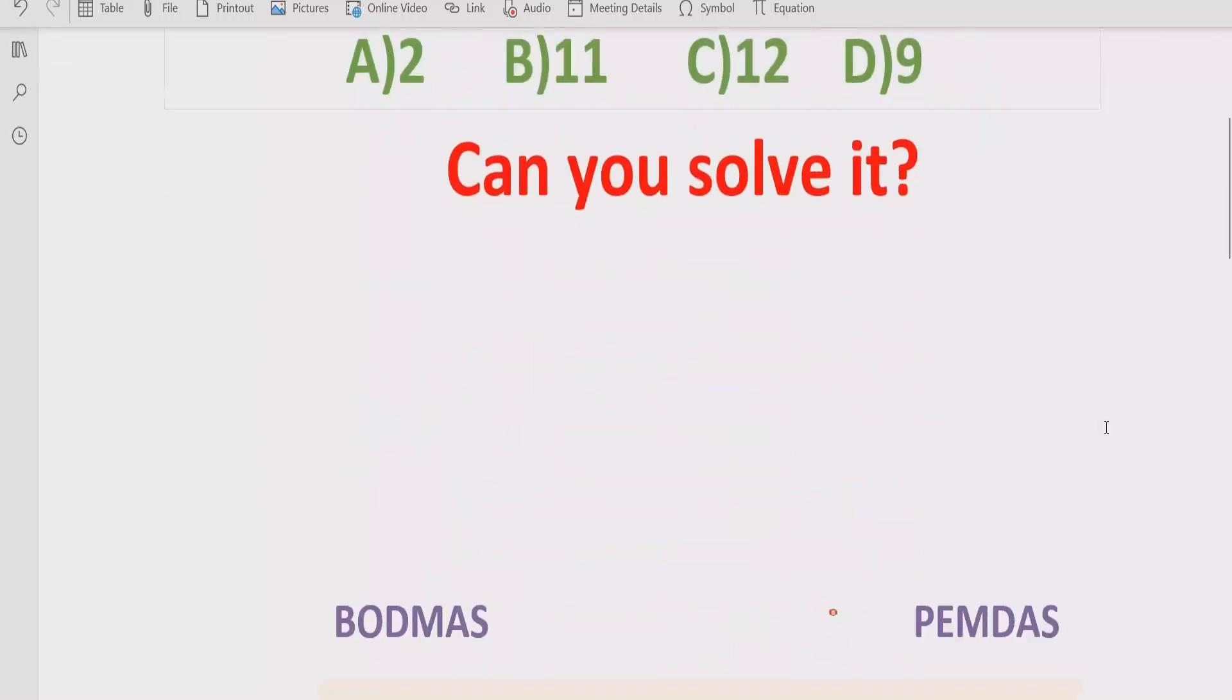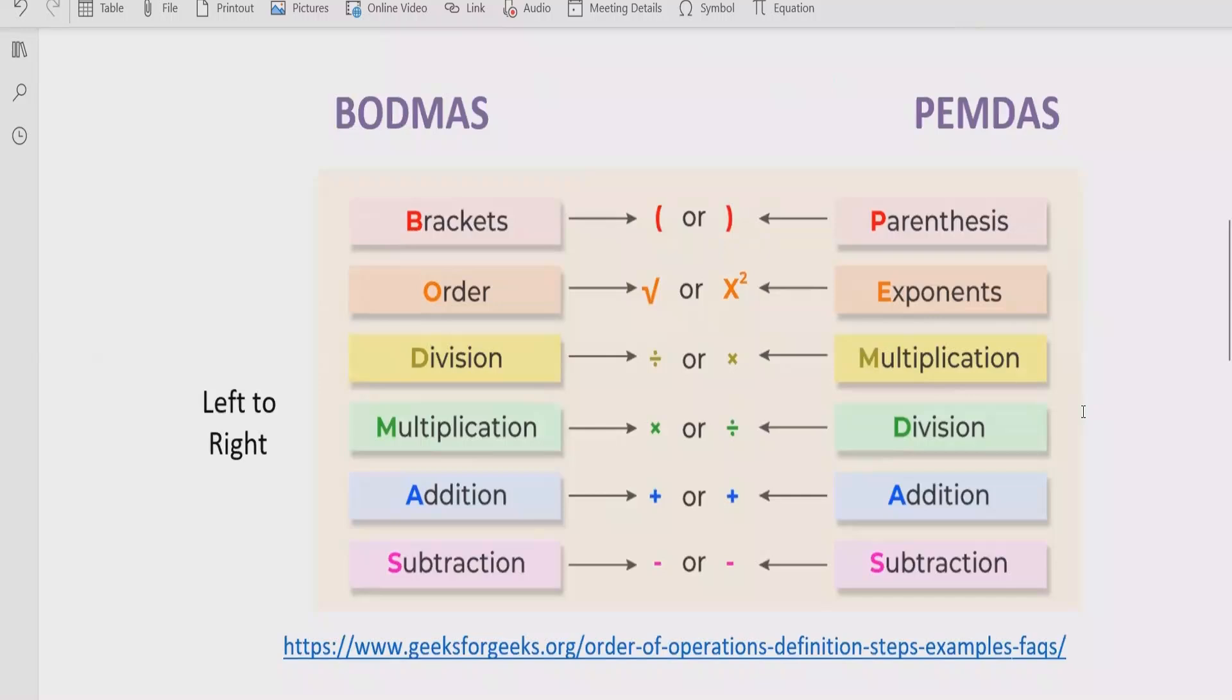Now let's move forward to recall what is BODMAS and PEMDAS rule. As you can see on the screen, BODMAS B stands for brackets and P stands for parenthesis. It means that if your expression contains any brackets and parenthesis, you have to solve that part first in your expression.